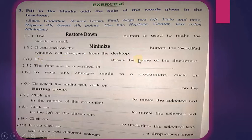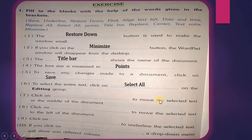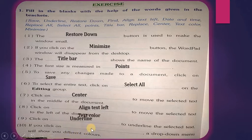The title bar shows the name of the document. Font size is measured in points. To save any changes, we use Save. To select entire text, click Select All in the Edit group. Click center to move the selected text to the middle of the document. Click left alignment to move selected text to the left. Click underline to underline selected text.